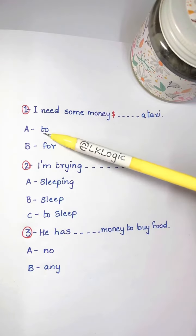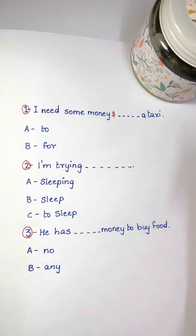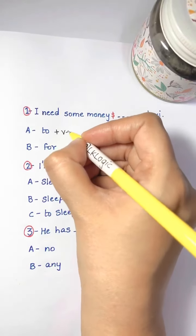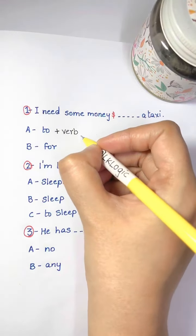I need some money blank a taxi. To, for a taxi, to and for—here are conjunctions of purpose. We use them to tell the reason why. I need money to—here should be followed by a verb.